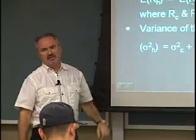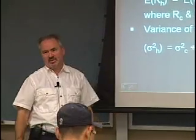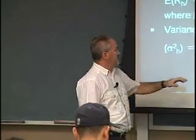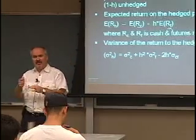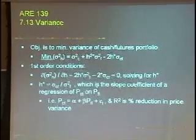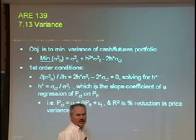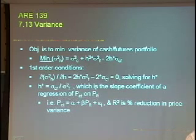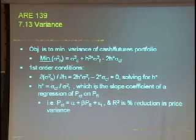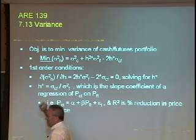So that gives you the return on the hedged position. We then take the variance of that expression and find that it depends on the variance of the cash, the variance of the futures, and the covariance between cash and futures — it depends how they move together. The whole idea with putting together a portfolio of futures and cash is that you're trying to minimize risk for a given return. We minimize the variance by taking the first order condition and choosing H.